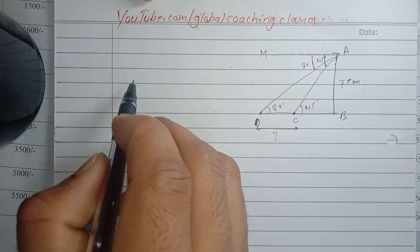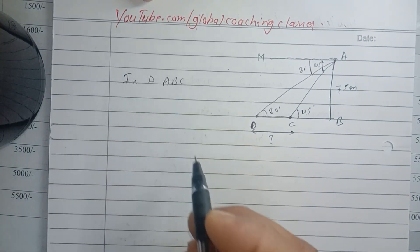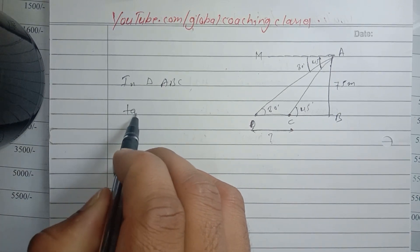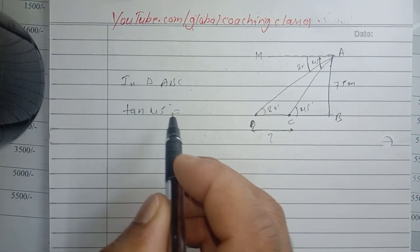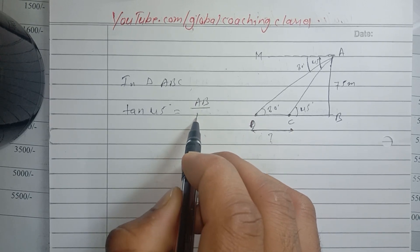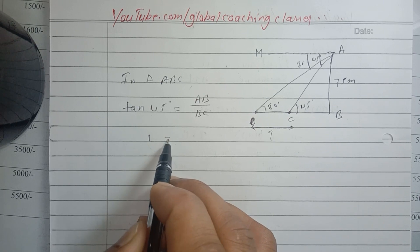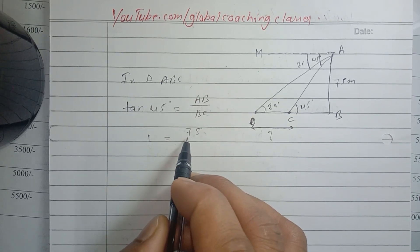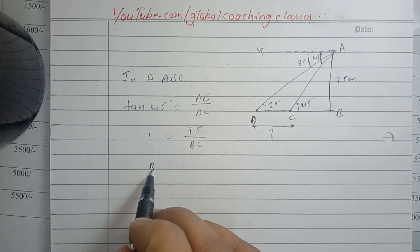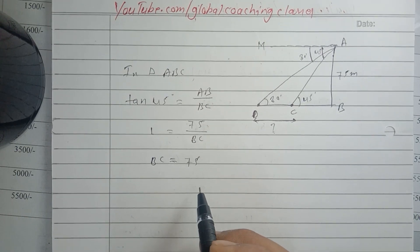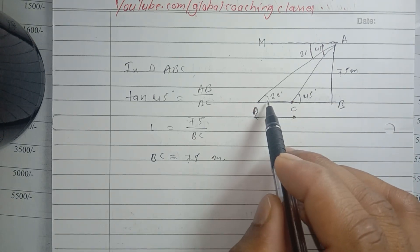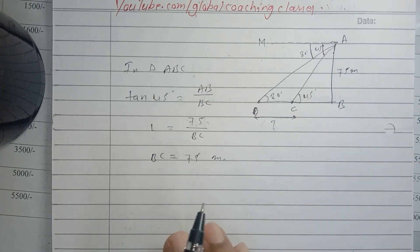देखिए अब हम क्या करेंगे - सबसे पहले हमने क्या किया, जो triangle ABC है इसमें हम काम करते हैं। In triangle ABC, हमने tan लगाया क्योंकि tan theta में perpendicular over base होता है। यहाँ पर angle दे रखा है 45, तो tan 45 = perpendicular/base, जो कि AB/BC है। tan 45 की value होती है 1, AB हमको already दे रखा है 75, और cross multiply करने पर BC = 75 meters आ जाता है।